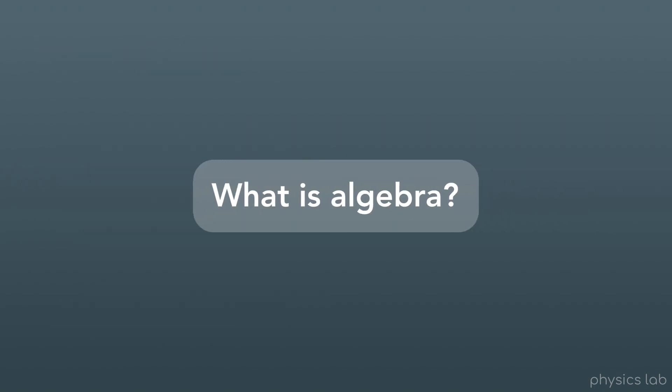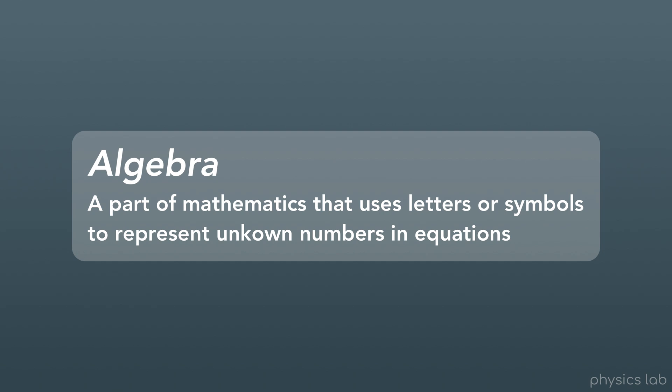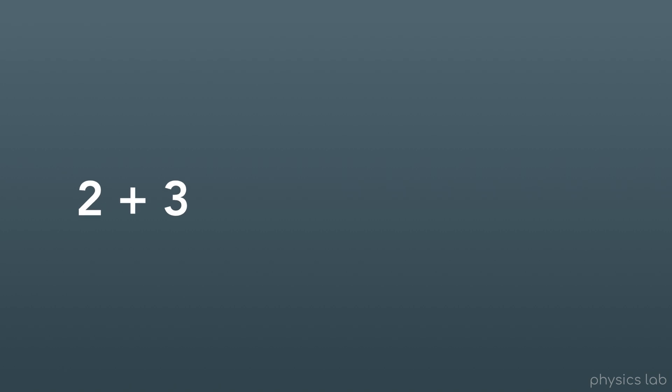So first off, what is algebra? Algebra is a part of mathematics that uses letters or symbols to represent unknown numbers in equations. Usually in math, you're used to solving a problem where it asks you to do the math and find the answer — like 2 plus 3 equals what? We would just add 2 and 3 and get 5.